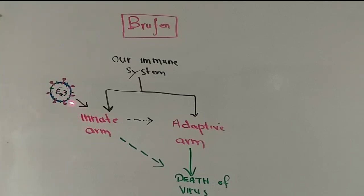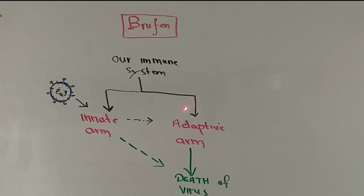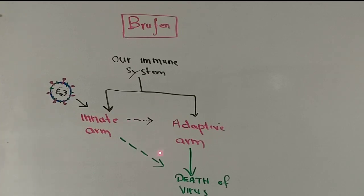The immune system comprises macrophages, dendritic cells, natural killer cells, and B lymphocytes. It readily attacks the virus and breaks it down into different pieces — including RNA, spike protein, lipid bilayer, and E and M proteins — and then presents any part of it to the adaptive arm. This adaptive arm has T cells, which we call naive T cells, because they don't know how to behave initially.